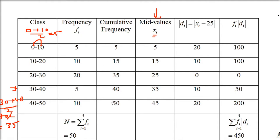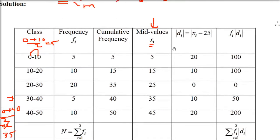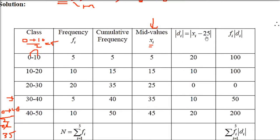An important point: the last cumulative frequency must equal the sum of all frequencies, i.e., capital N = Σfi. Here it comes to 50, so the last cumulative frequency is also 50. Now we proceed to find the median from this cumulative frequency table.